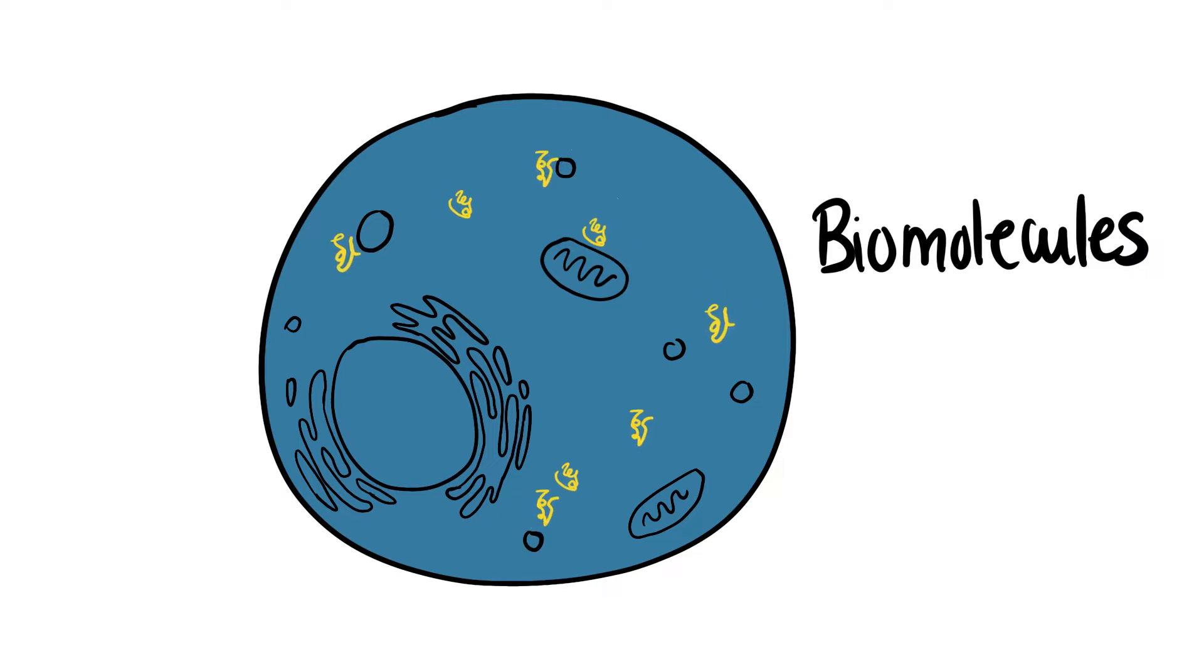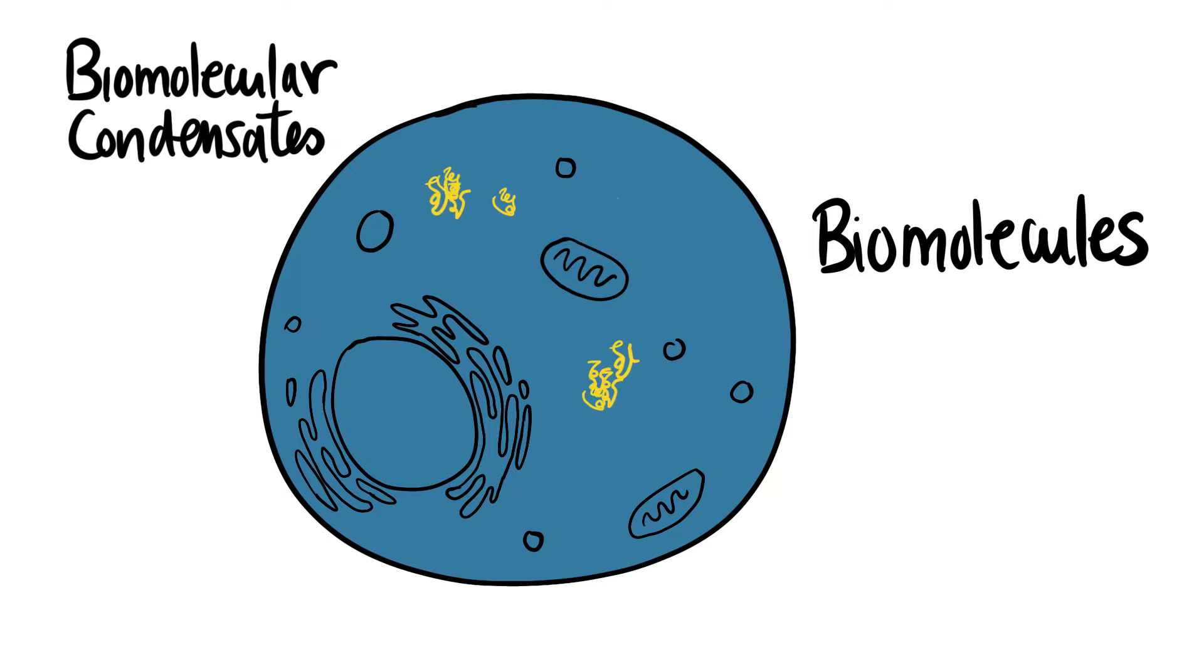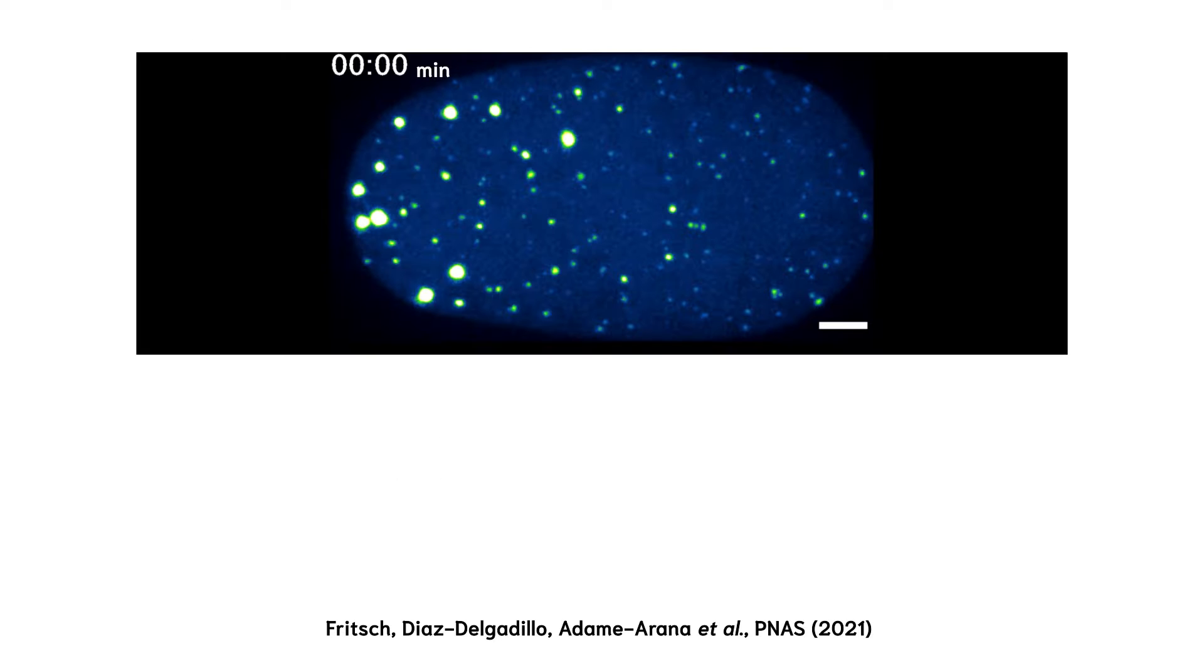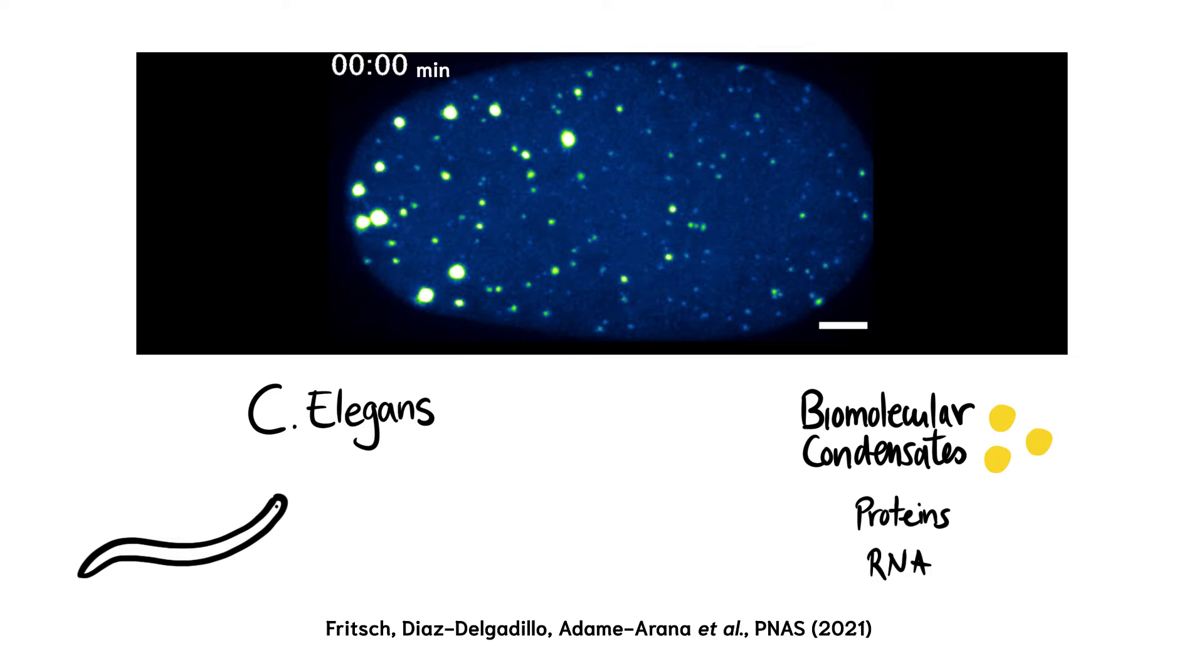In cells, some biomolecules come together and separate into droplets called biomolecular condensates. This is a cell of a small worm called C. elegans. The bright spots are a type of biomolecular condensate made of proteins and RNA. These condensates are essential for the worm to reproduce.